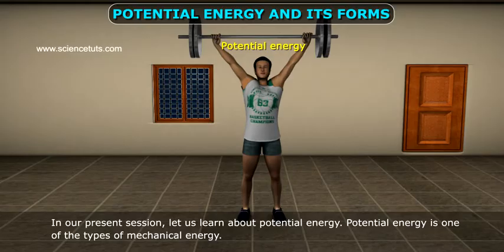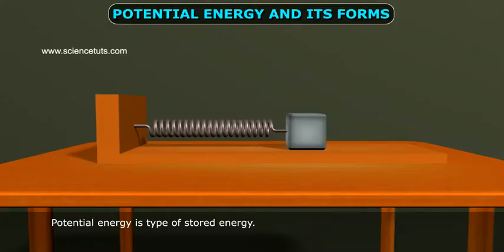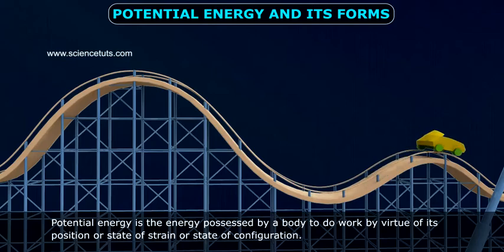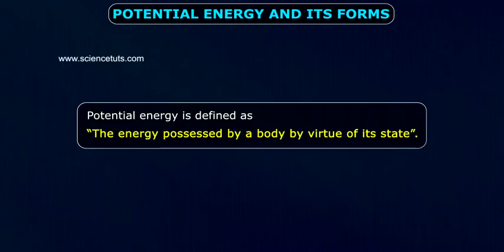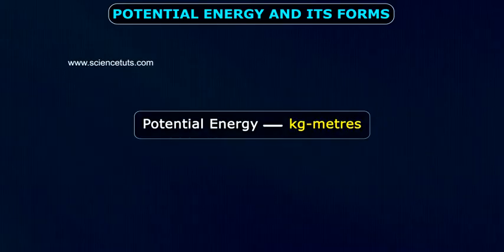Potential energy is one of the types of mechanical energy. Potential energy is a type of stored energy. It is the energy possessed by a body to do work by virtue of its position or state of strain or state of configuration. In definition, potential energy is defined as the energy possessed by a body by virtue of its state. The unit of potential energy is kilograms meters.